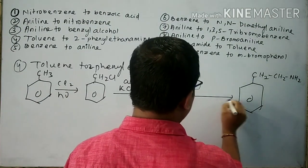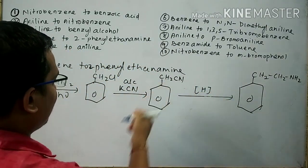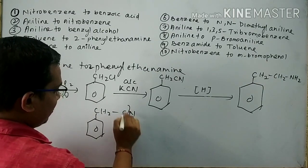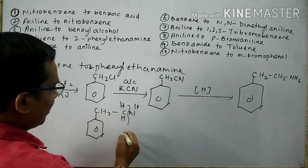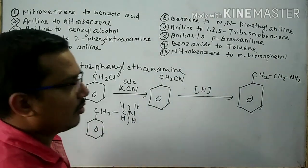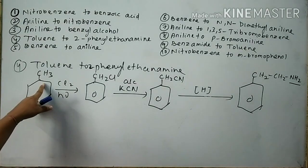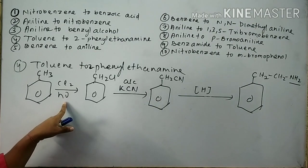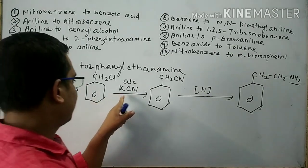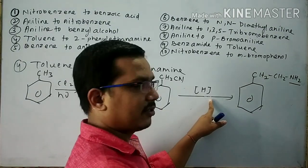Now benzyl cyanide is subjected to reduction. Then 2-phenylethanamine is formed. During reduction, 2 hydrogens are given to the carbon and nitrogen — a total of 4 hydrogens are given to the CN group, converting CN into CH2NH2.